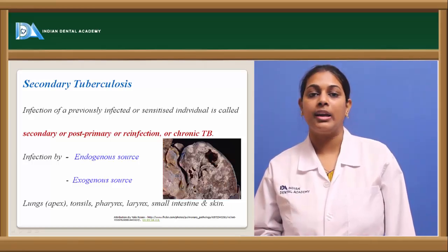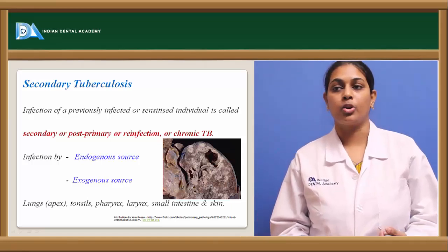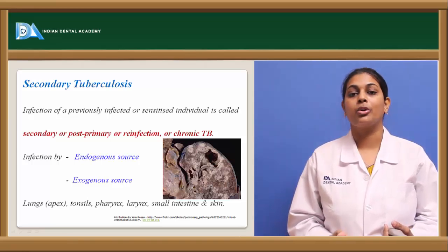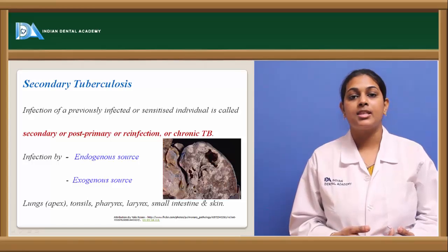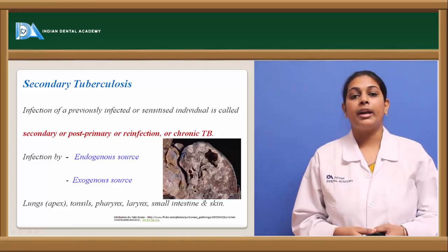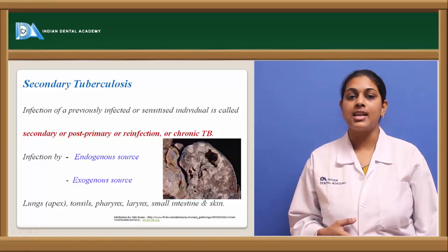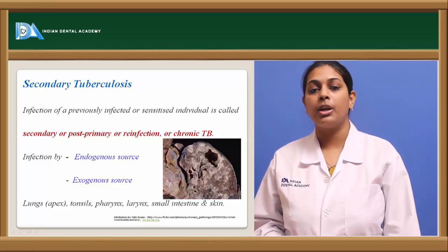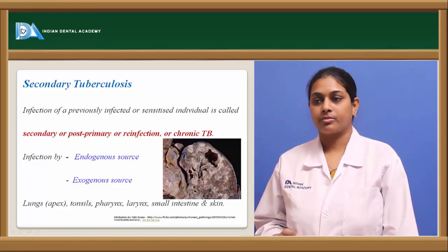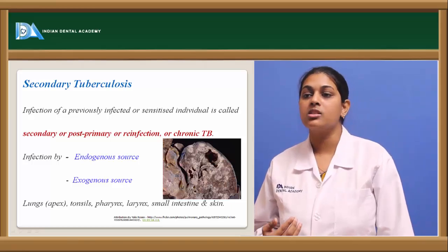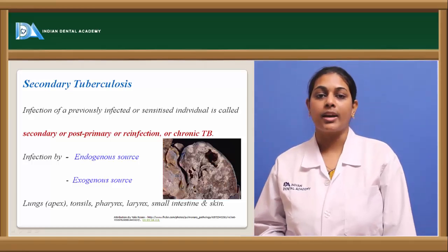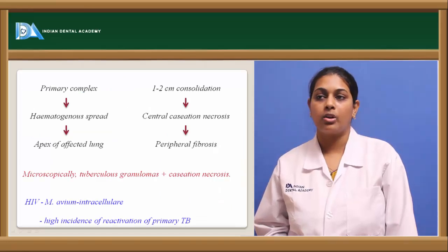When the primary complex is the source, it is known as endogenous source, as the bacillus within the individual reactivates the already healed lesion resulting in secondary tuberculosis. The most common area for secondary tuberculosis is the lungs, particularly the apex region. Following the lungs in decreasing order: tonsils, pharynx, larynx, small intestine, and skin.